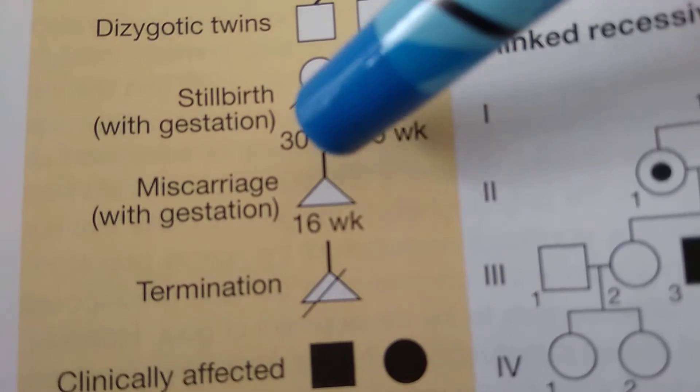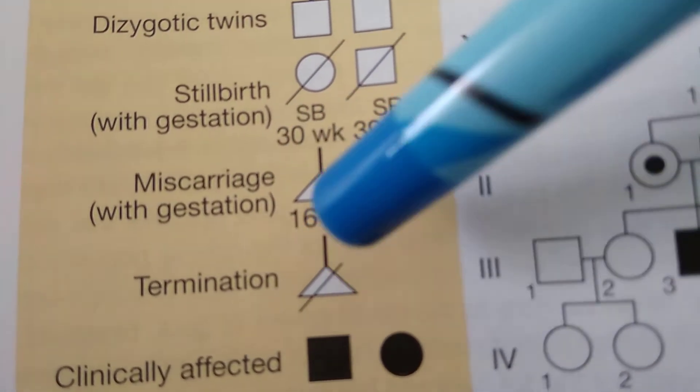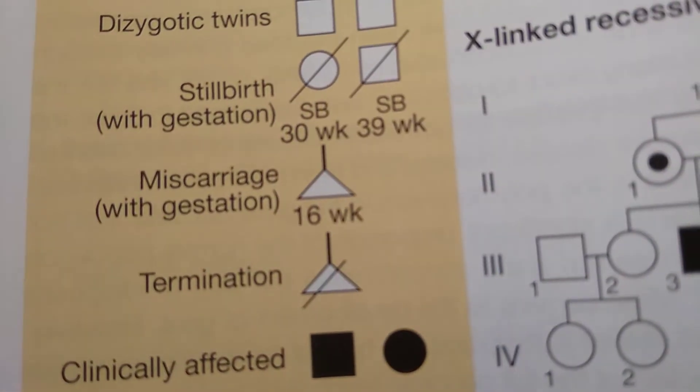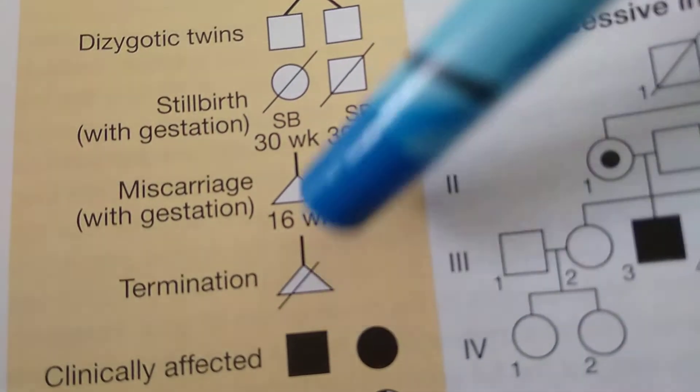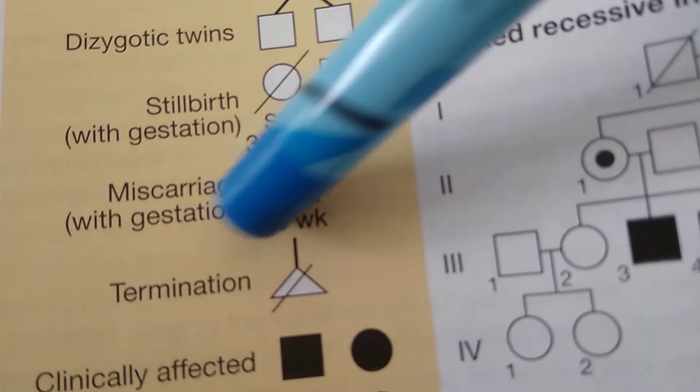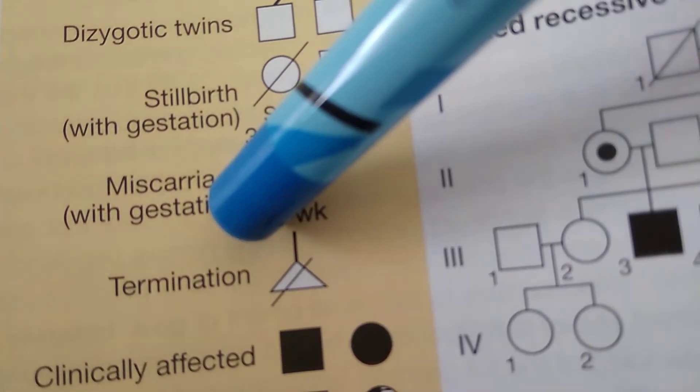And termination is where there's a line. So this is very interesting, isn't it? This is something that wouldn't strike me, and I would still put a line for miscarriage because that person is also dead, isn't it?